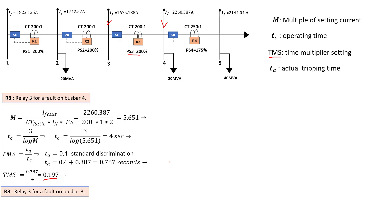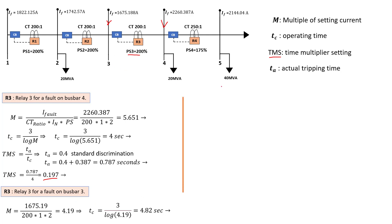Now calculating M for relay 3 with a fault on bus bar 3: M equals 1.6 kilo amps divided by 200 times 1 times 2, giving M equal to 4.19. From there we calculate TC, which gives 4.82 seconds — that is the operating time for relay 3 for a fault on bus bar 3. The next step is to calculate TMS using the same formula, TA divided by TC.